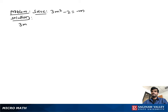Solve 3m squared minus 2 equal to negative m. First, make it in standard form as a quadratic equation: 3m squared plus m minus 2 equal to 0.